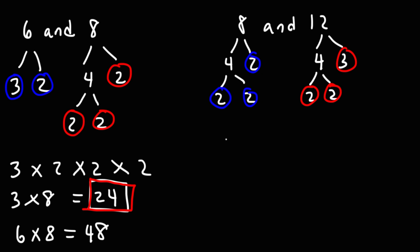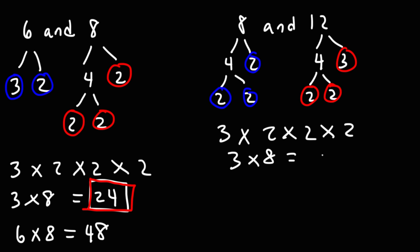Now, 8 has zero factors of 3, and 12 has one factor of 3 — we'll pick the higher number, which is one factor of 3. 8 has three factors of 2, and 12 has two factors of 2 — we'll pick the higher number, which is three factors of 2. So 2 times 2 times 2 is 8, and 3 times 8 is 24. So we get the same answer.